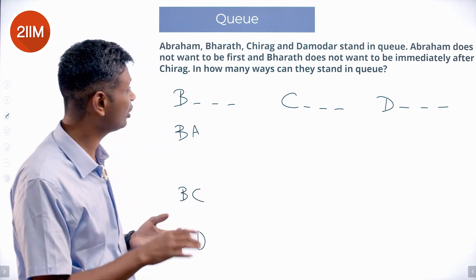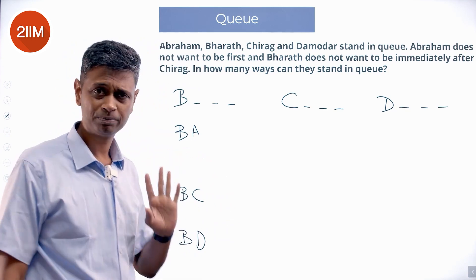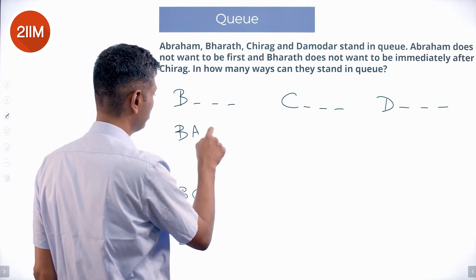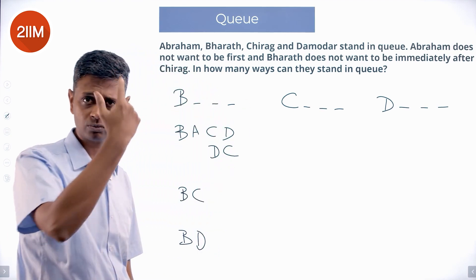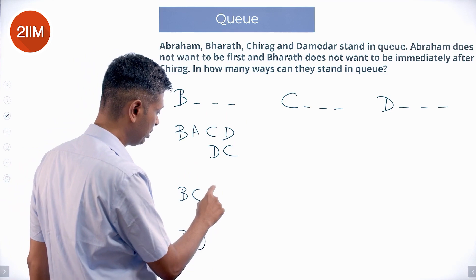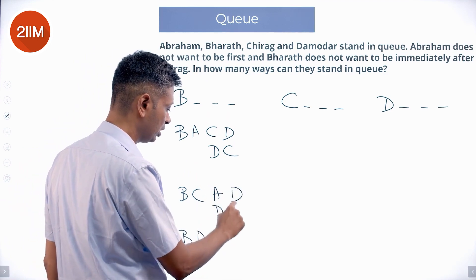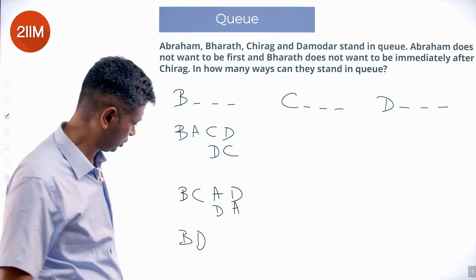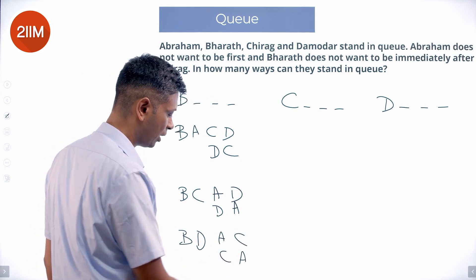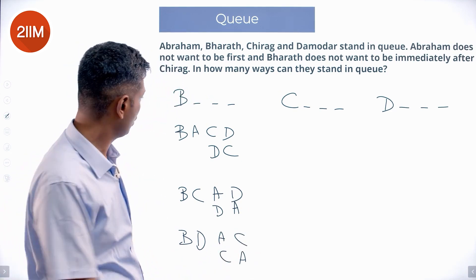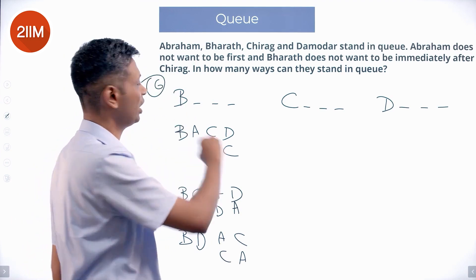First one is B, second could be A, C or D. All three are valid because we cannot have a C B, we can have a B C. With B A what could it be? B A C D, B A D C, both are possible. With B C what could it be? B C A D, B C D A, both are possible. With B D what is possible? B D A C, B D C A, both are possible. Six possibilities starting with B.